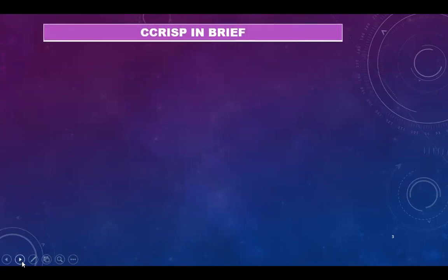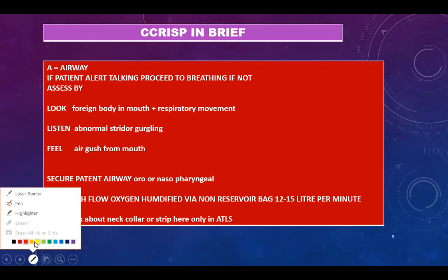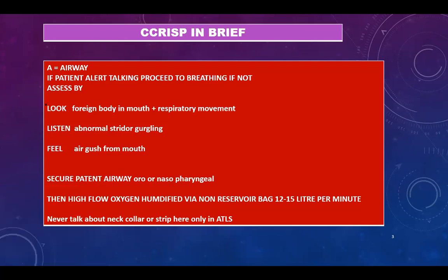The CRESP — never mention 'CRASP' in the exam; say 'care of a critically ill surgical patient.' The airway is the first step. You must secure a patent airway. If the patient is alert, you will talk to them: 'Hello? Do you hear me? Can you raise your hand?' Just talk to the patient. If they are responding, it means the patient is alert and the airway is patent.